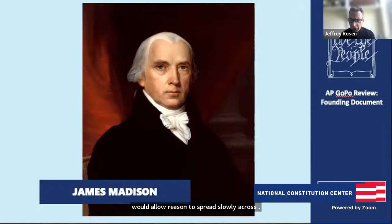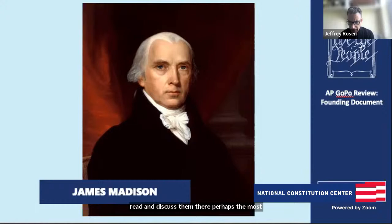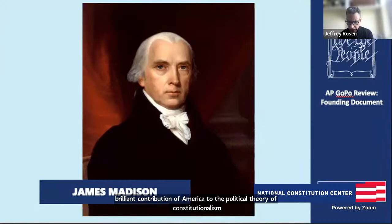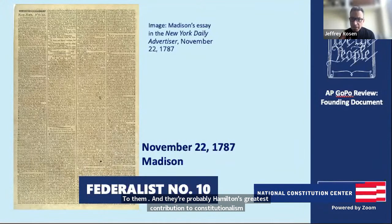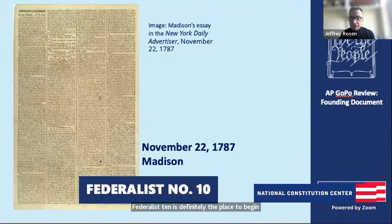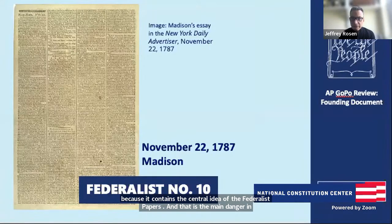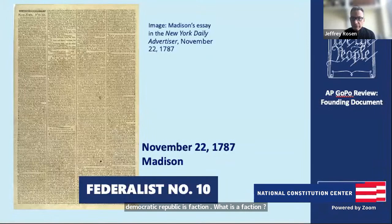Federalist 10 is the place to begin because it contains the central idea of the Federalist Papers: the main danger in a democratic republic is faction. What is a faction? Madison defines a faction as any group — either a majority or a minority — animated by passion rather than reason, devoted to self-interest rather than the public good. Madison says there are many causes for faction: political struggles, religious struggles. The latent causes of faction are sown in the nature of man.